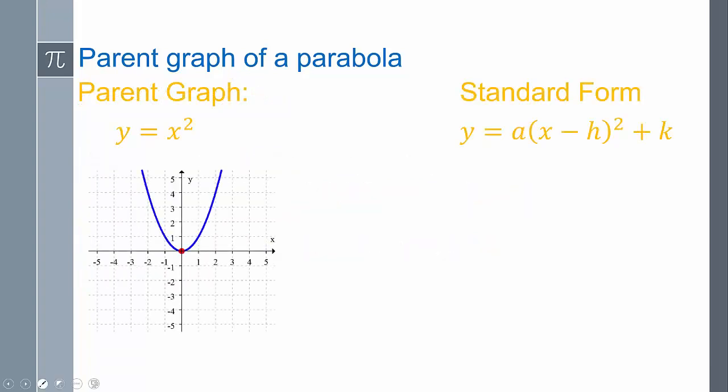Here's the parent graph of our parabola, y = x². A key thing about this is it starts at (0, 0). That's our vertex, and then it has that shape. I'm pretty certain we already know what that shape is. That's the standard form of our function, and as it has an a, an h, and a k, that's going to shift our graph up and down and move it.